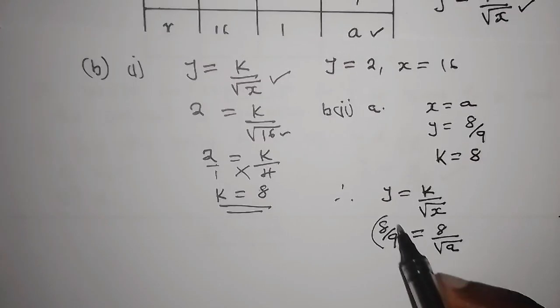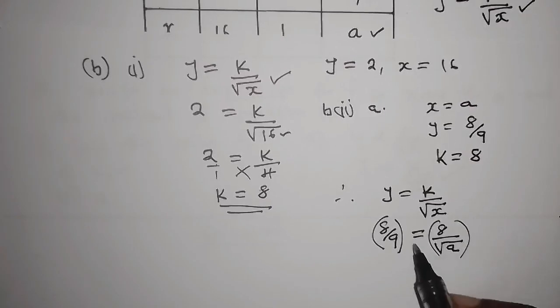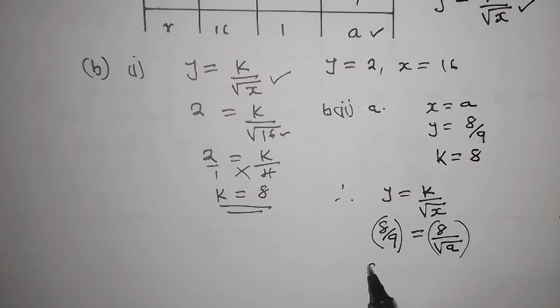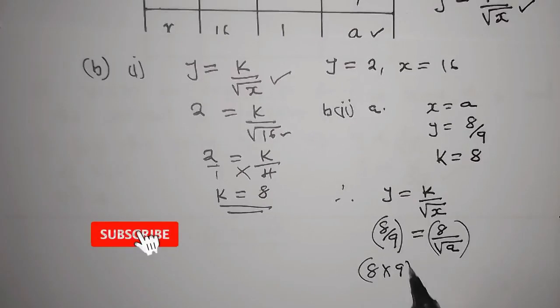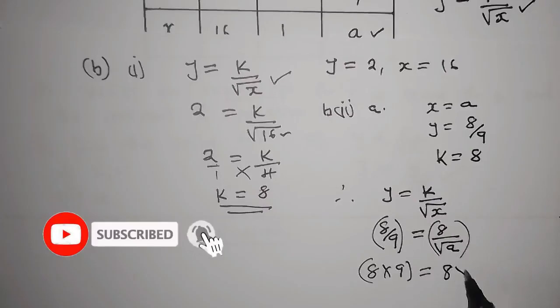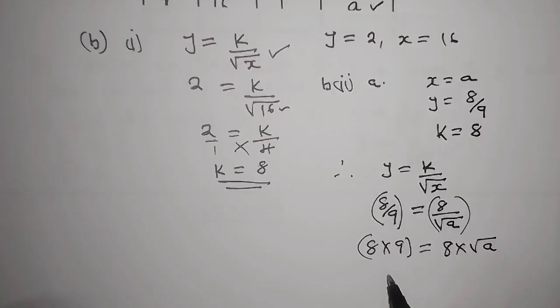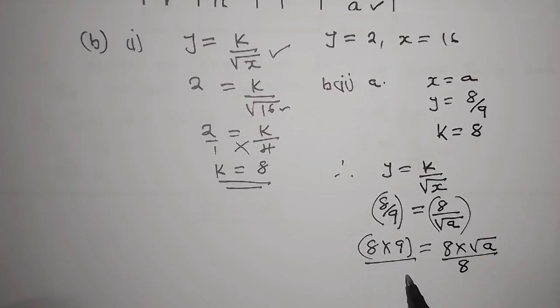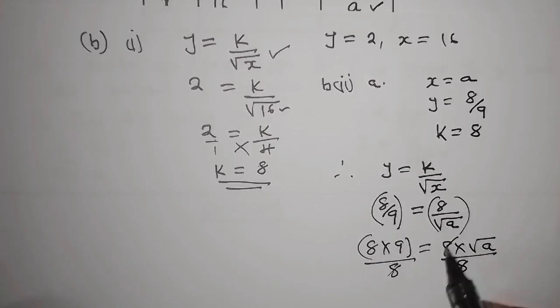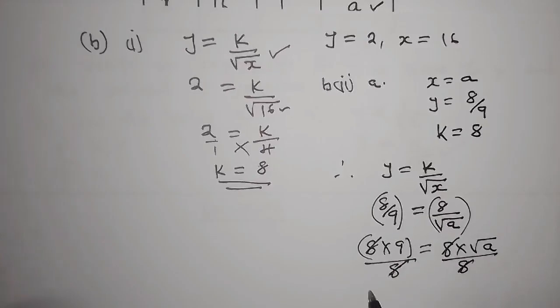You cross multiply. Meaning, you're going to say 8 multiplied by 9, and 8 multiplied by the square root of a. So from there, you can now divide both sides by 8. So this and this goes, this and this goes. So you remain with 9.